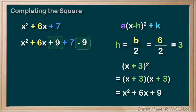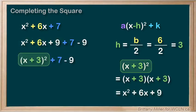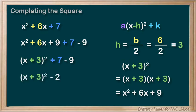So we can add a 9 here as long as we take 9 away later on. Okay, here's where the magic happens. This part of the expression factors into x plus 3 squared and then 7 minus 9 is equal to negative 2. And that's it. It's in vertex form.